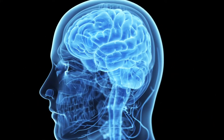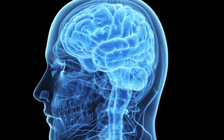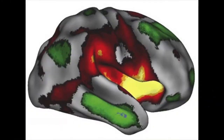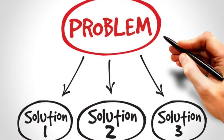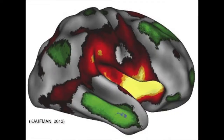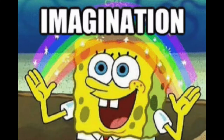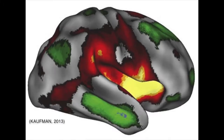Welcome to Inside the Brain. These three neural networks all become activated during the process of creative cognition. Lit up in green represents an activation of the executive attention network, which is used in complex problem solving. In red is activation of the imagination network, which is used for imagination. Then there's the salience network, which is shown in yellow, and that directs one's focus.